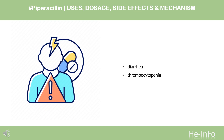Side effects. The most common adverse effect is diarrhea, occurring in 7–11% of patients. Another adverse effect is inhibition of platelets, which is also known as thrombocytopenia.